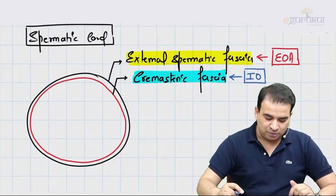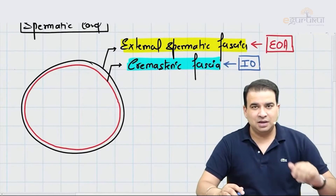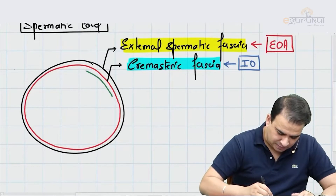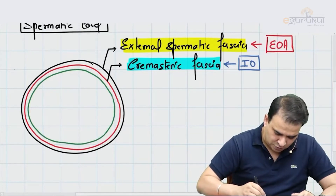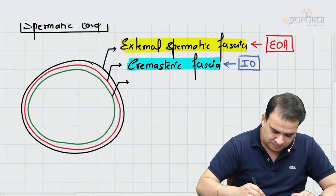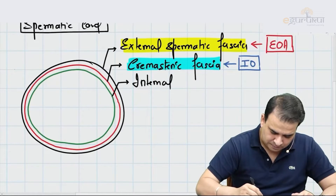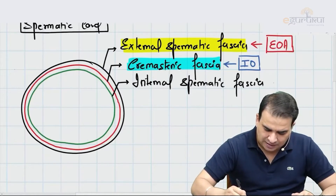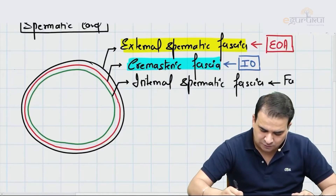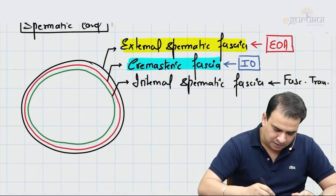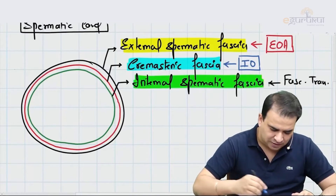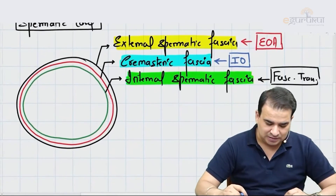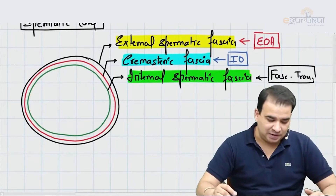Transverse abdominis muscle is believed not to have any extension below the abdominal wall, neither in the scrotum nor in the spermatic cord. So it's the internal oblique muscle which forms the cremasteric fascia. Then we have the third layer, which is the internal spermatic fascia. The internal spermatic fascia is the extension of the fascia transversalis — it is the fascia transversalis which is forming the internal spermatic fascia, not the transverse abdominis muscle.